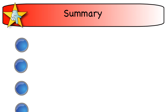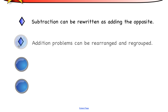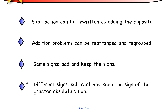To summarize what we've learned in this lesson: subtraction can be rewritten as adding the opposite. Addition problems can be rearranged and regrouped. When you have the same signs, add and keep the sign. When you have different signs, subtract and keep the sign of the bigger number, or the bigger absolute value. That's it for lesson two — see you next time.